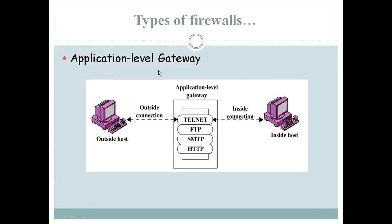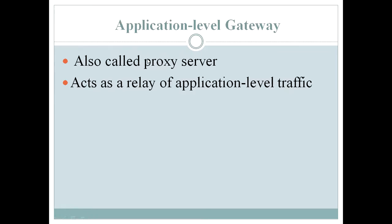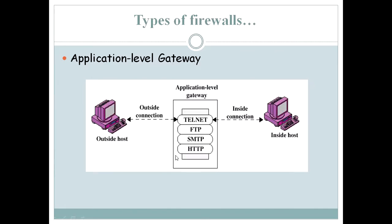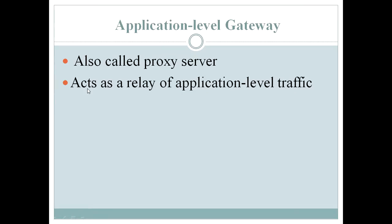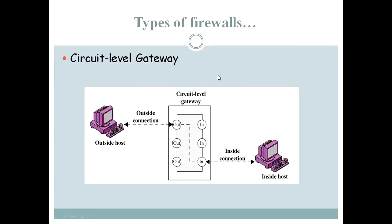The second type is the application level gateway, which sits between the outside host and the inside host. It supports protocols like Telnet, FTP, SMTP, and HTTP. Application level gateways are also called proxy servers, and they act as a relay of application-level traffic between the inside host and the outside host.